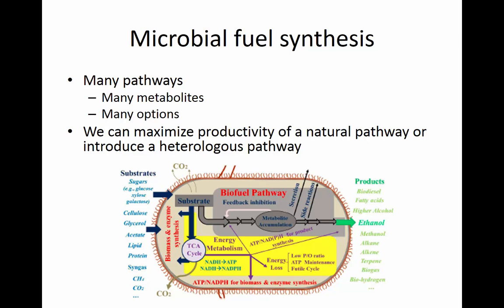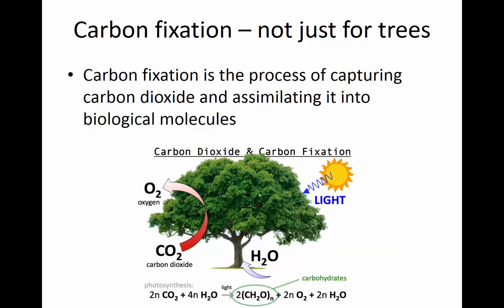We can maximize productivity of a natural pathway — for example, Saccharomyces cerevisiae — or introduce a heterologous pathway, like with E. coli, putting in any biofuel pathway we choose, in order to make an organism that can create fuels for us.